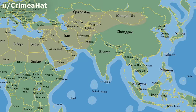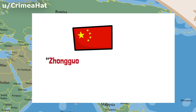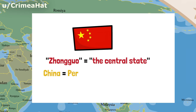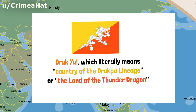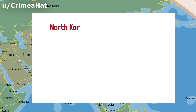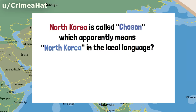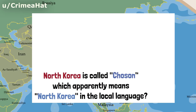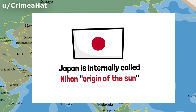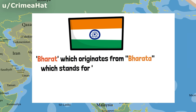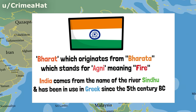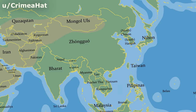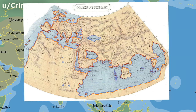In Asia, most are also just native versions of the English exonyms, with the exceptions of China, whose endonym is Zhongguo meaning 'the central state' in the native language, while China seems to come from the Persian word for the region. Bhutan's native name is Druk-Yul, which literally means 'country of the Druk-Pa lineage' or 'the land of the thunder dragon' — a much cooler name, honestly. North Korea is called Joseon, which apparently literally means North Korea in the local language, while South Korea calls itself Hanguk, the Great Han Republic. Japan is internally called Nihon, meaning 'origin of the sun,' and India is Bharat, which originates from the Sanskrit word Bharata standing for Agni meaning fire, while India comes from the name of the river Sindhu used in Greek since the 5th century BC.